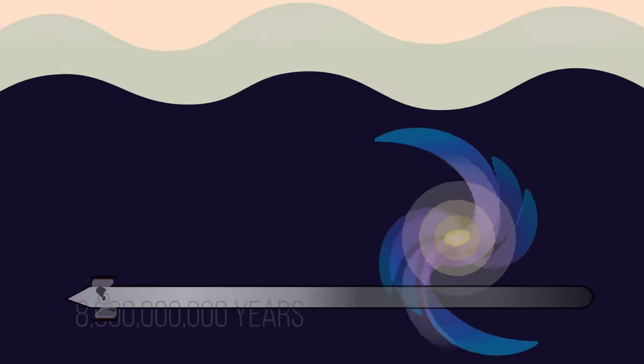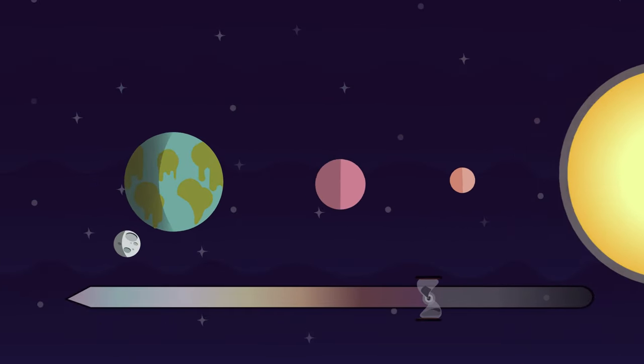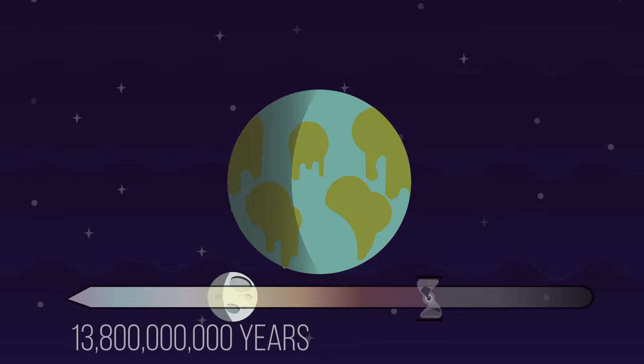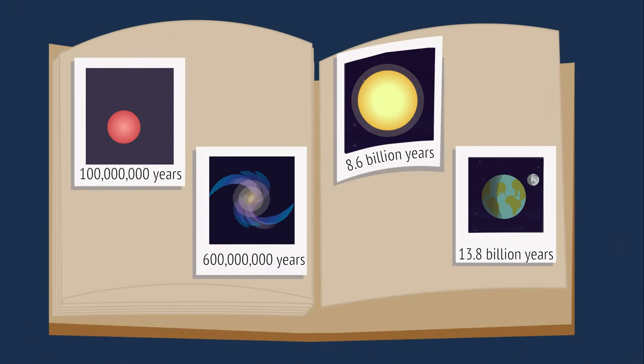At 8.6 billion years, the sun forms, giving birth to our solar system. Today, the universe is 13.8 billion years old. It has continued to expand, and the photons of the early cosmos have continued to stretch, becoming invisible low-energy microwaves, which are nearly radio waves.